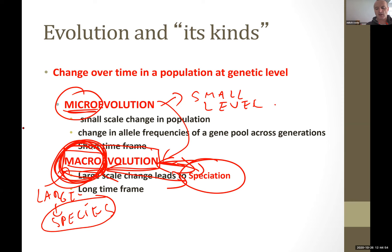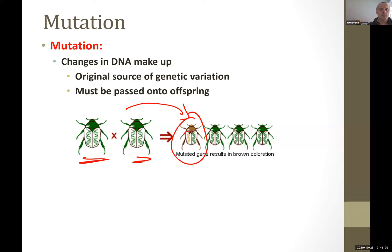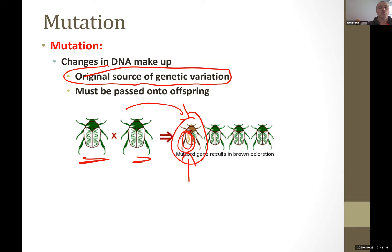Mutation: how can mutation lead to micro-evolution? If you have one single mutation — like people with sickle cell, they have a mutation so their blood looks different from ours, but they are still human. Here you can see two green bugs that mated, and somehow one acquired a little brown coloration — that's a mutation. This mutation is the original source of variation, which may make the species stronger in the future.